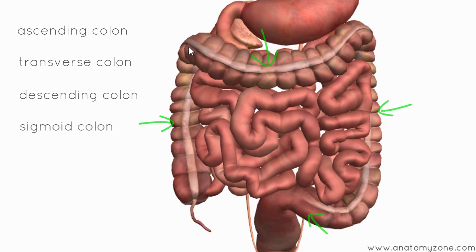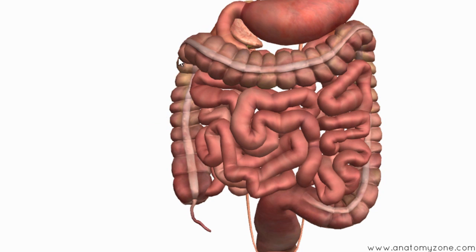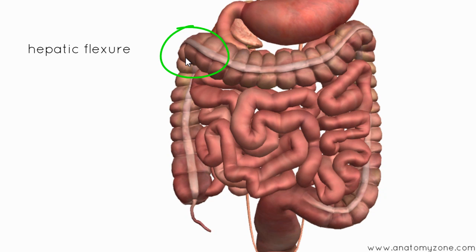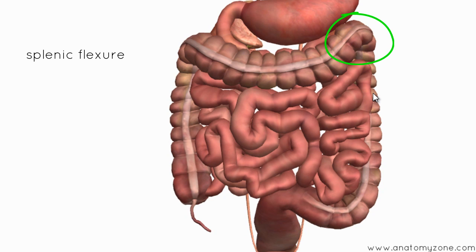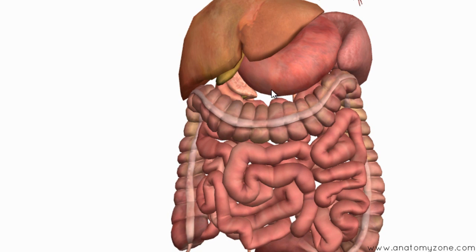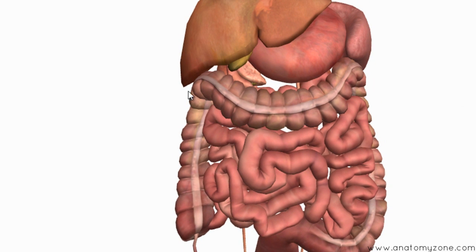Where the ascending colon meets the transverse colon, there's a bend called a flexure. The liver sits over the right side, so this bend is called the hepatic flexure — hepatic referring to the liver. On the left side, where the transverse colon meets the descending colon, there's the splenic flexure, because this is where the spleen lies. You can see the hepatic flexure and the splenic flexure with the liver and the spleen.